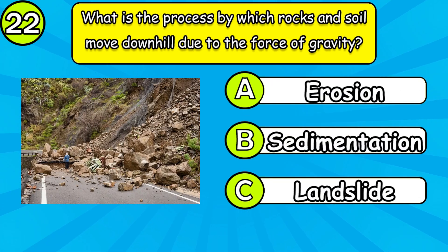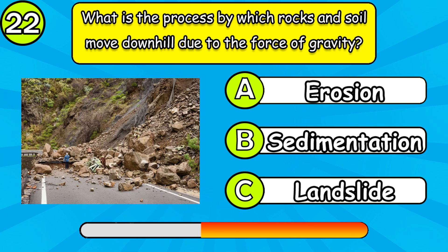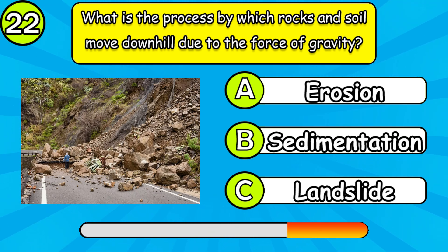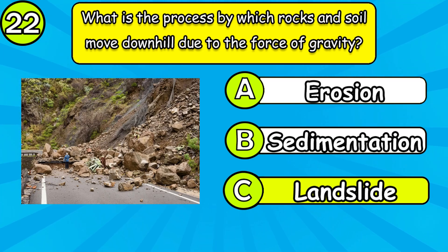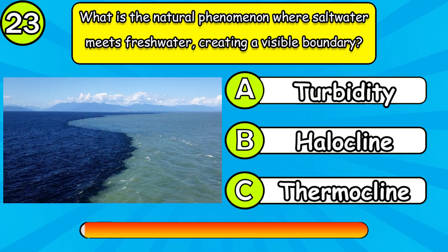What is the process by which rocks and soil move downhill due to the force of gravity? What is the natural phenomenon where salt water meets fresh water, creating a visible boundary?